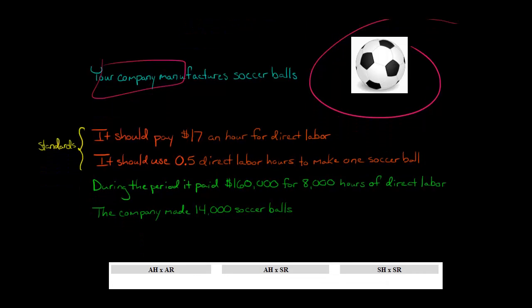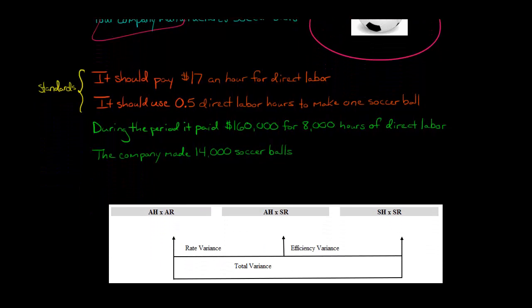Now when I go to do the variance, the rate variance, I like to set it up like this. We've got actual hours times the actual rate and then the actual hours times the standard rate. And then I also put standard hours times standard rate, but we don't need that to calculate the rate variance. That'll be for the efficiency variance.